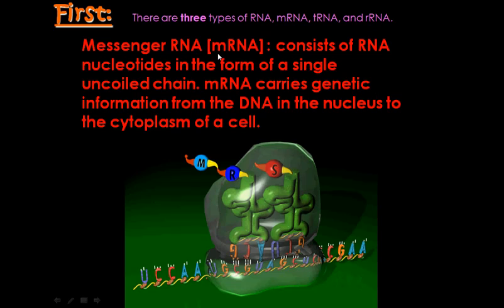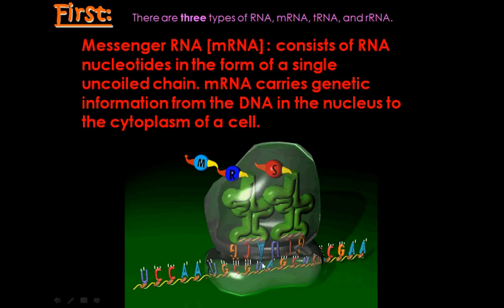Messenger RNA, often abbreviated as mRNA, consists of RNA nucleotides in the form of a single, uncoiled chain. This exposes all the nucleotides so they can easily be read by the tRNA. Messenger RNA carries the genetic information from the DNA in the nucleus to the cytoplasm of the cell. This picture does a nice job of illustrating the single, uncoiled strand of messenger RNA, part of which is inside the ribosome.